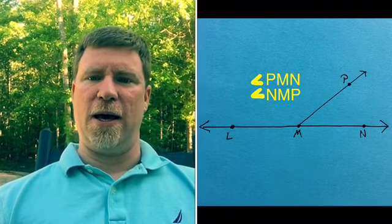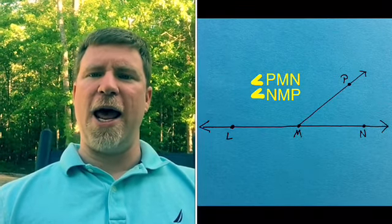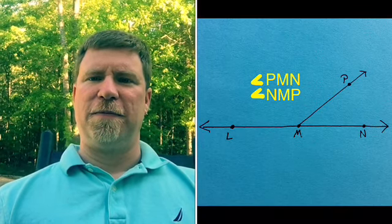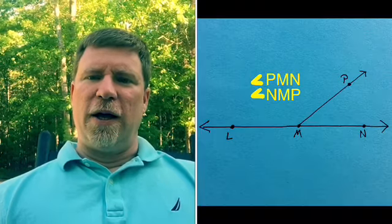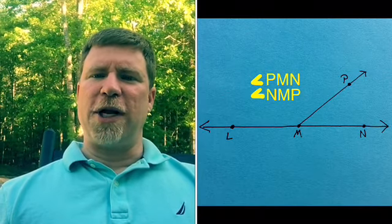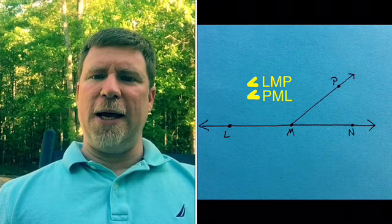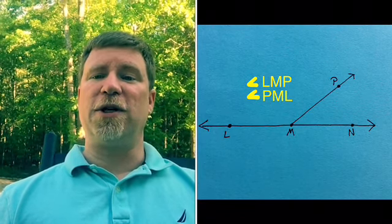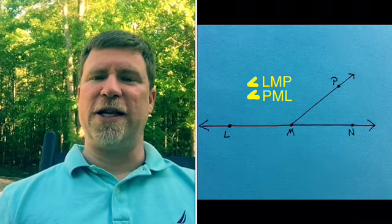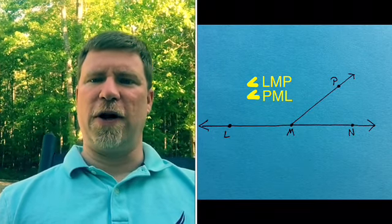Well, let's check. One of the possibilities would have been angle PMN or NMP, so that would be for the acute angle. The other one, the obtuse angle, could have been either LMP or PML, with the vertex being listed in the center of either of those names. And that's it. That's all it is to it.